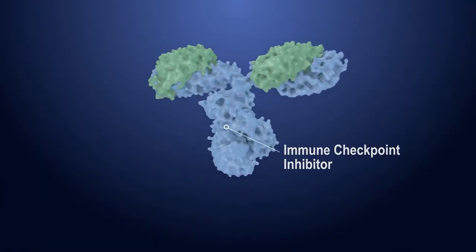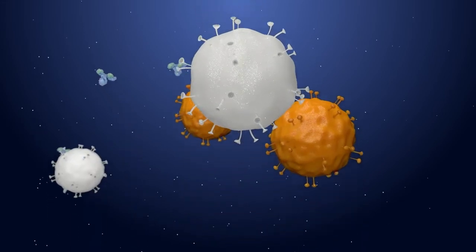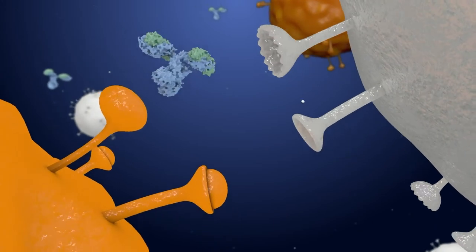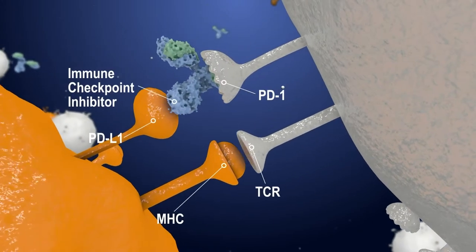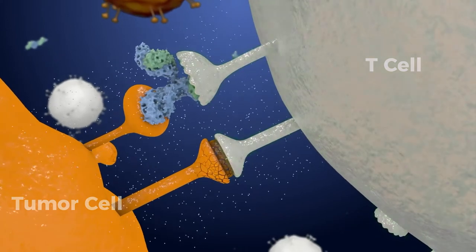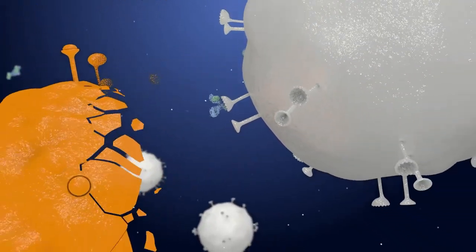Immune Checkpoint Inhibitors, such as PD-1 antibody, are drugs that prevent the cancer cells from restraining the activity of T-cells by forming a barrier between them. Once the stop signal from cancer cells cannot reach T-cells, T-cells can proceed to attack the cancer cells.